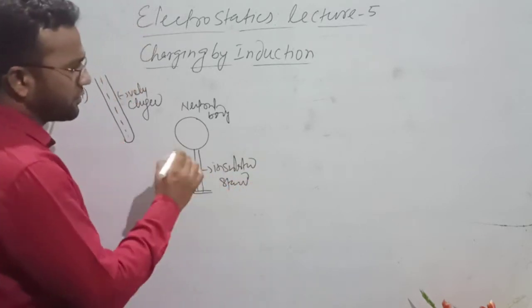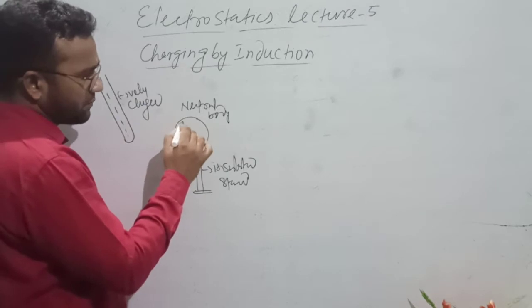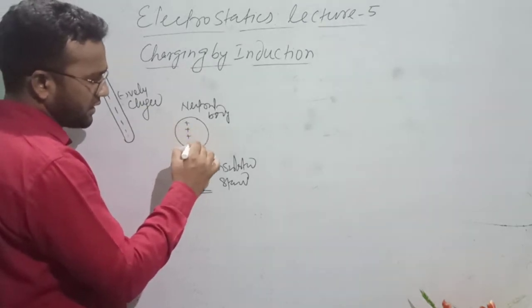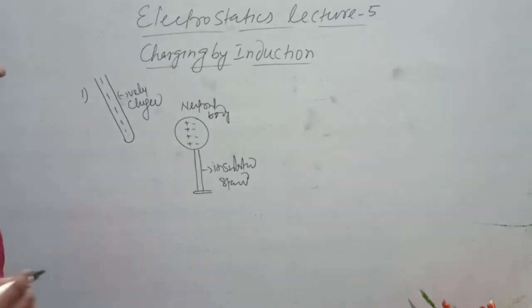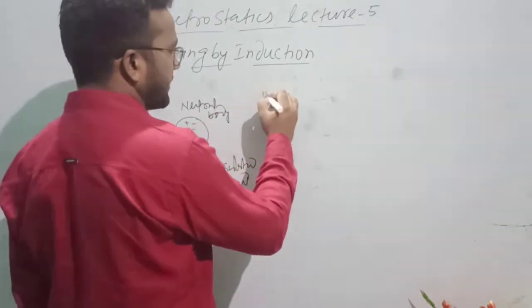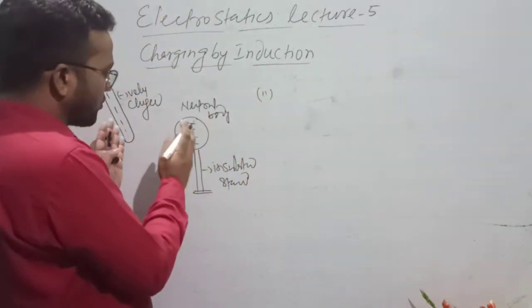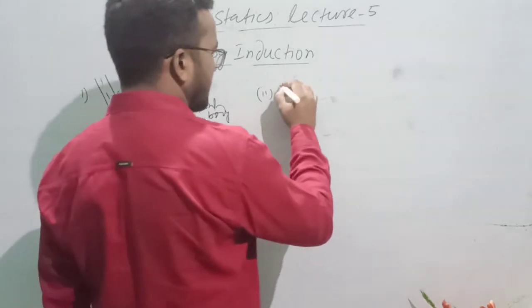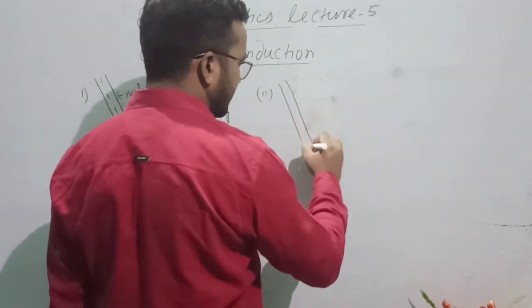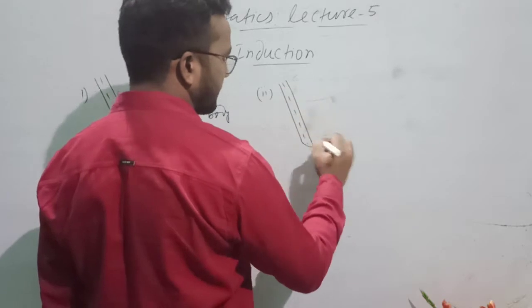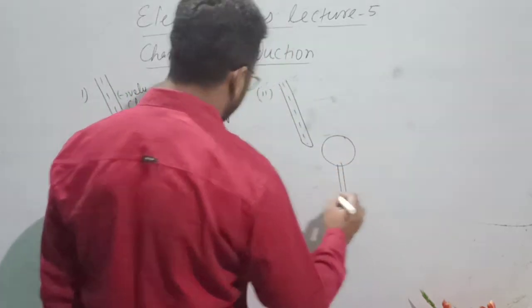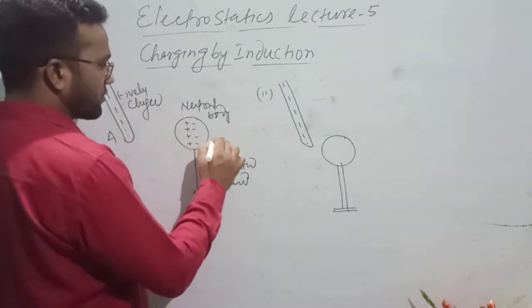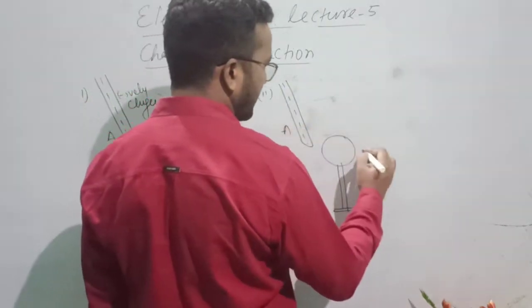The neutral body has both positive charge and negative charge. What do we do in the next step? We bring these two close together. We don't touch them. We just have body A and body B. These are A and B.